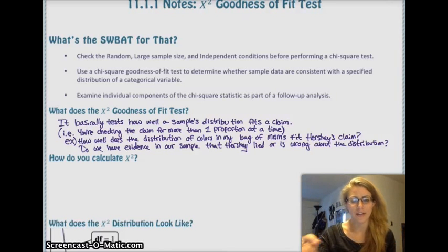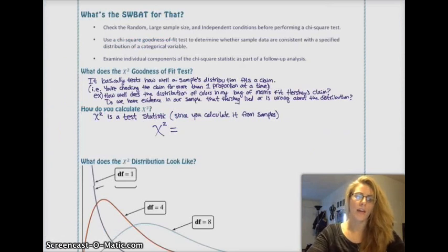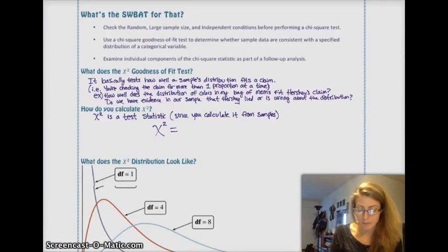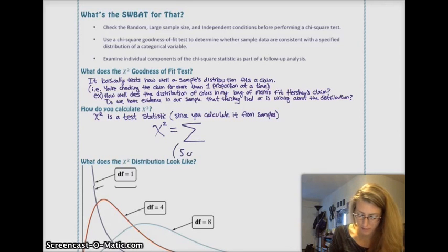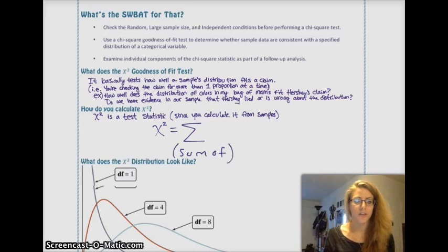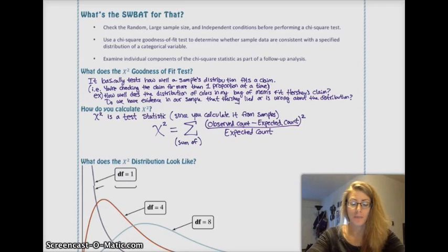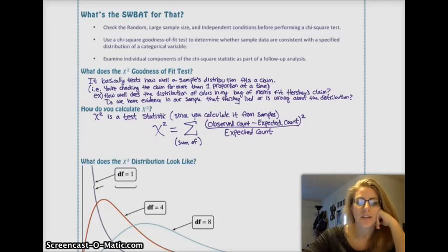How do you calculate chi-squared? Chi-squared is a statistic, because you're always calculating it from a sample. Chi-squared is calculated using the formula: the sum of (observed minus expected) squared, all over expected. The observed and expected values are not proportions — they are counts. Make sure you're always using counts for the chi-squared.